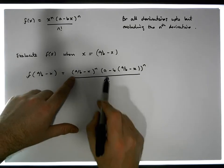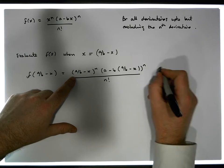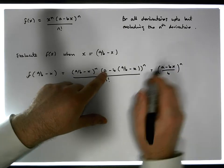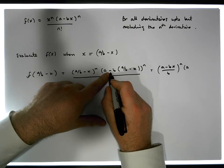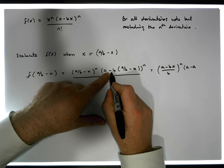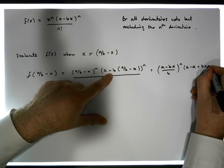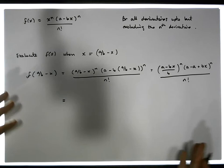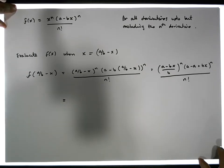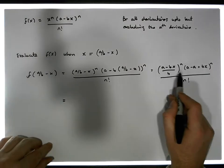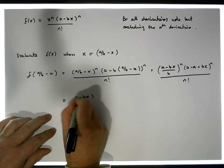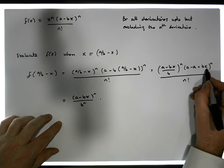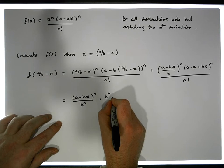Let's multiply this out and get the common denominator. This becomes (a - bx)/b raised to the power of n, times... b times a/b gives us a, so a minus a is zero, and minus times minus gives us a plus, so we end up with bx here, all raised to the power of n, divided by n factorial. Continuing with the algebra: this becomes (a - bx)^n over b^n, times b^n times x^n, all over n factorial. The b^n terms cancel out.